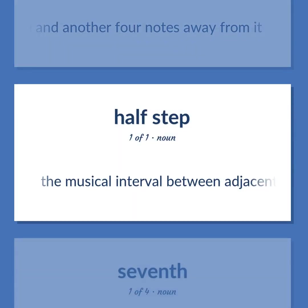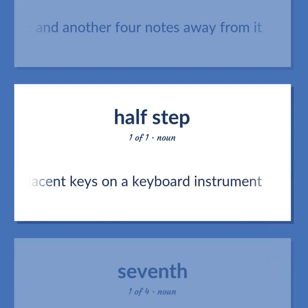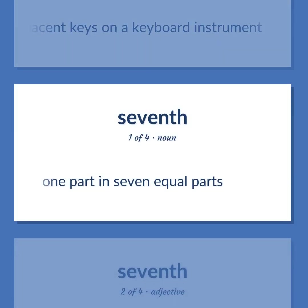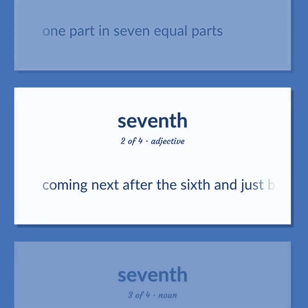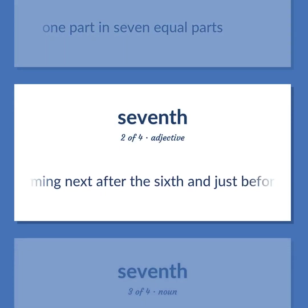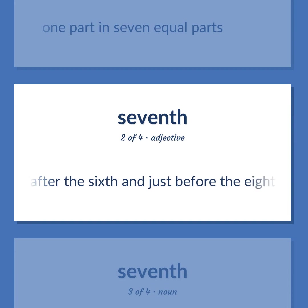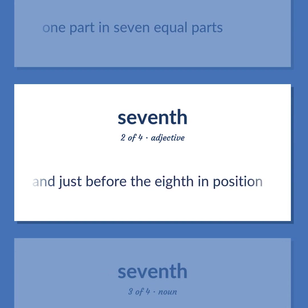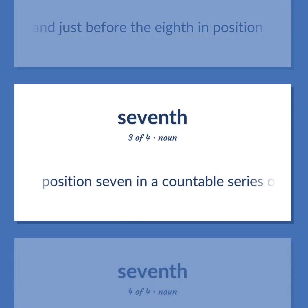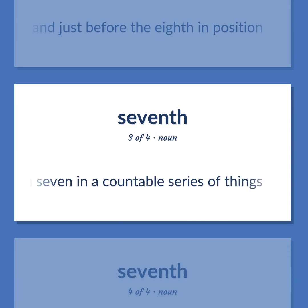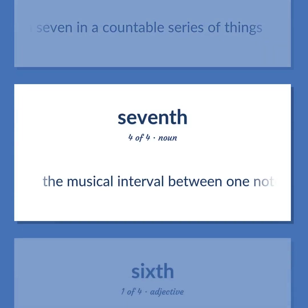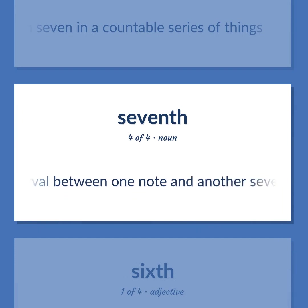The musical interval between one note and another four notes away from it. The musical interval between adjacent keys on a keyboard instrument. One part in seven equal parts. Coming next after the sixth and just before the eighth in position. Position seven in a countable series of things. The musical interval between one note and another seven notes away from it.